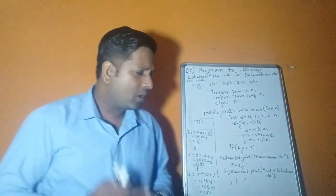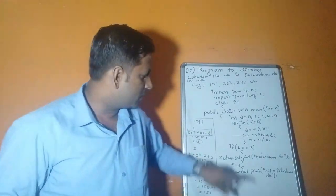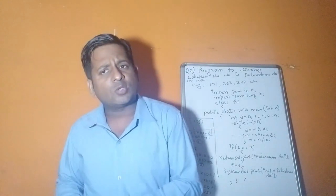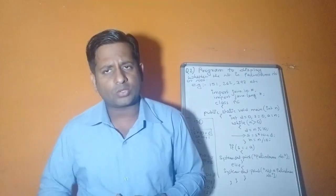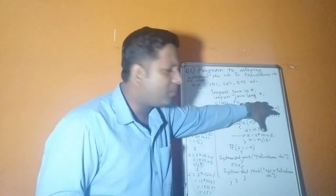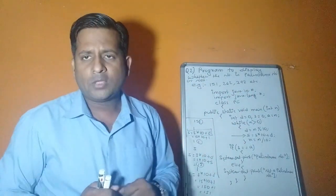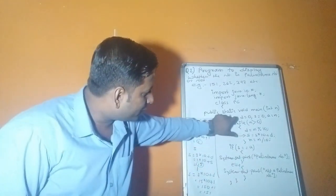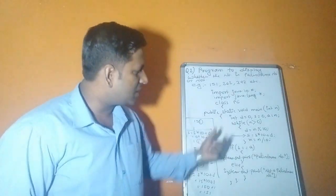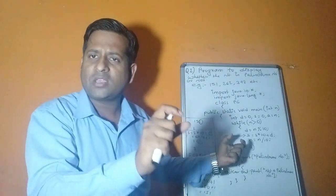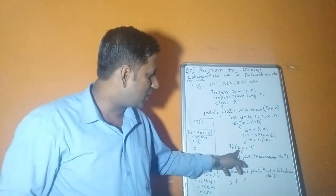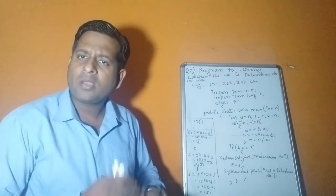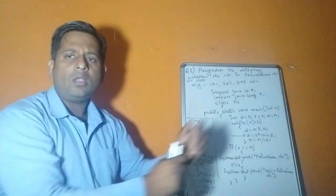Since n decreases every time (n = n / 10), we copy the original value of n into a before the loop, so that n changes but a remains safe. After the loop completes, we compare the reverse (stored in s) with the original number (stored in a). If both are equal, it's a palindrome; otherwise it's not.